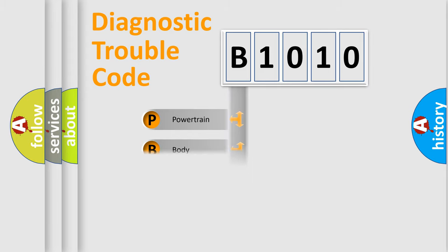Powertrain, Body, Chasis, Network. This distribution is defined in the first character code.